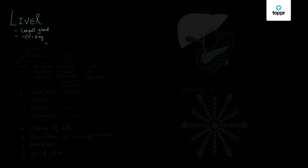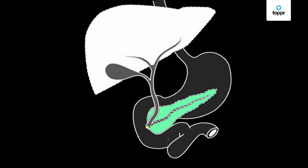Looking at the structure of the liver, it is found right of the stomach and is the largest gland of the body. It is majorly made up of two lobes - the right lobe and the left lobe.